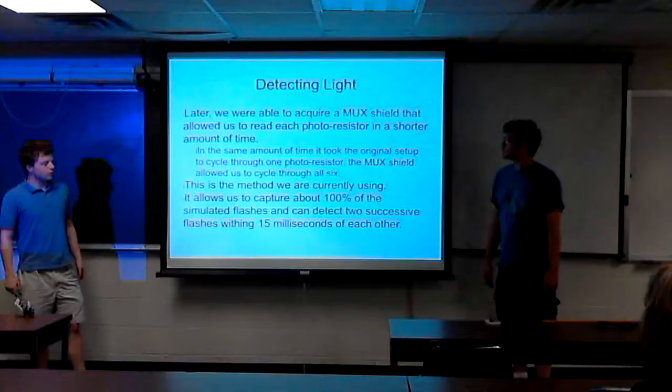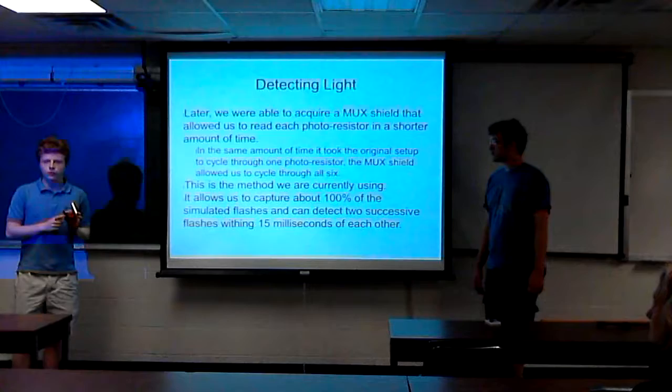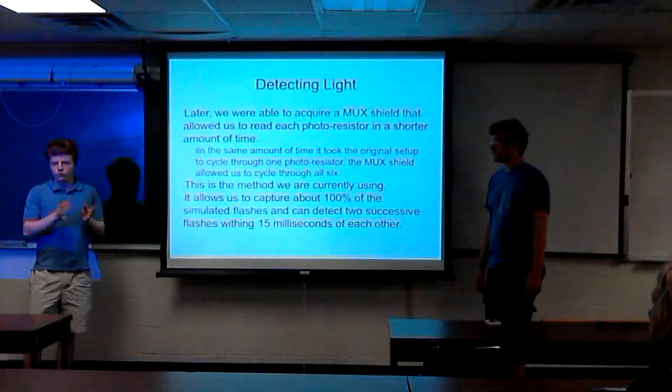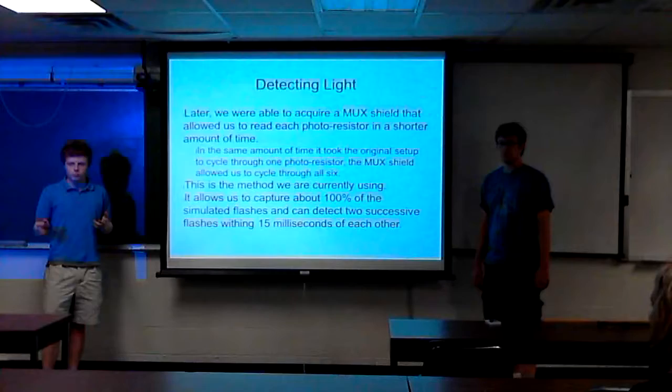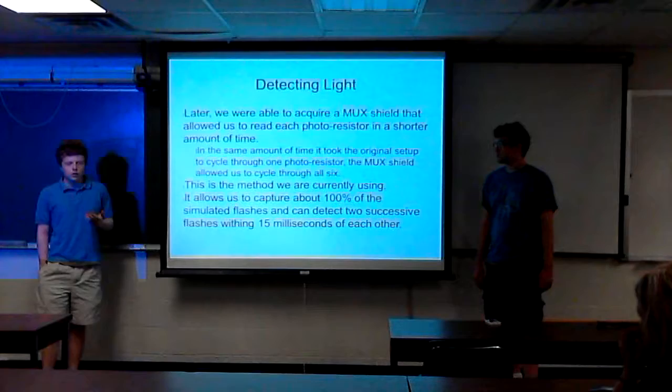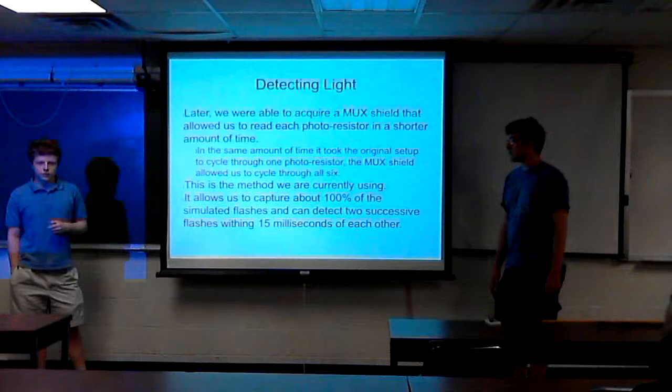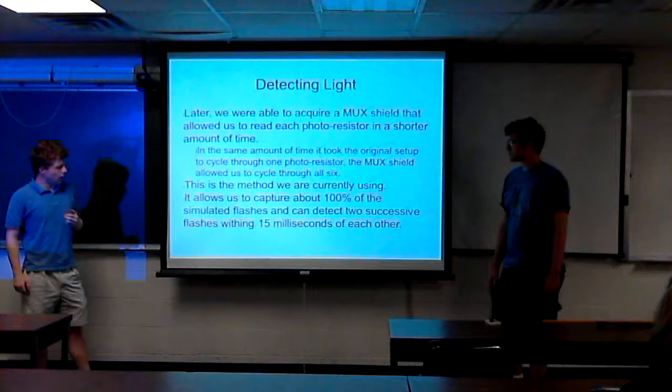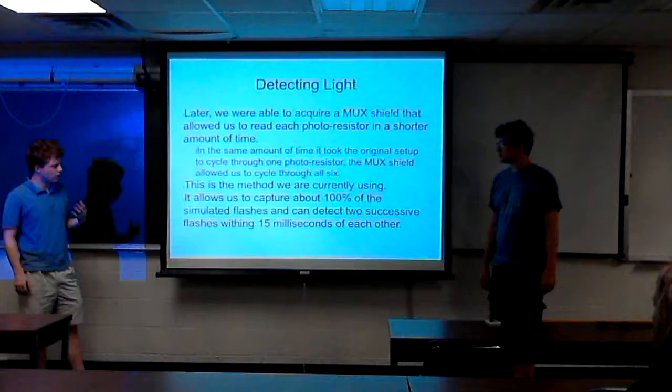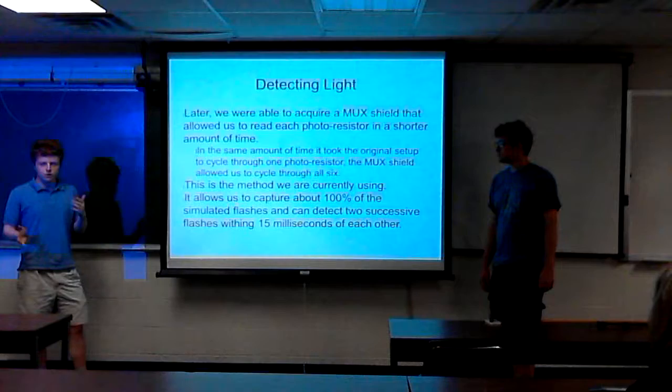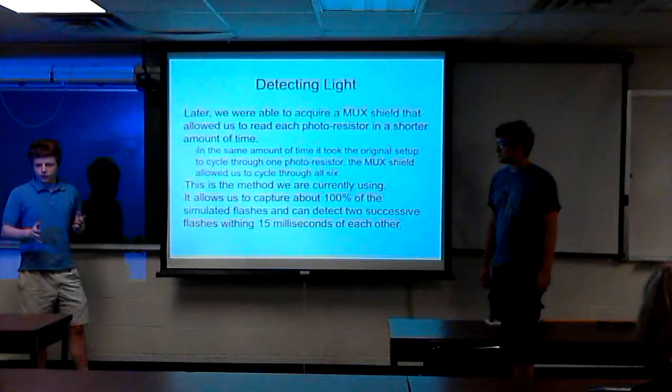So then we were able to get our hands on a MUC shield, which is this device on the top. And what it lets us do is, instead of reading through pins 0, 1, 2, 3, 4, 5, at the same time it would take to do that, it can now read through eight, it can now read through all six photoresistors, plus an additional two, around the same time that it would take to read through one. So using this method we were able to capture nearly 100% of all the flashes we produced by the strobe machine. And we measured our response time is about 15 milliseconds in between successive flashes of light. So 15 milliseconds is the fastest that we can detect two flashes of light. And since the lightning flash usually occurs 30 milliseconds apart, it's plenty of time to detect one flash of light, do some calculations, and detect another flash of light.